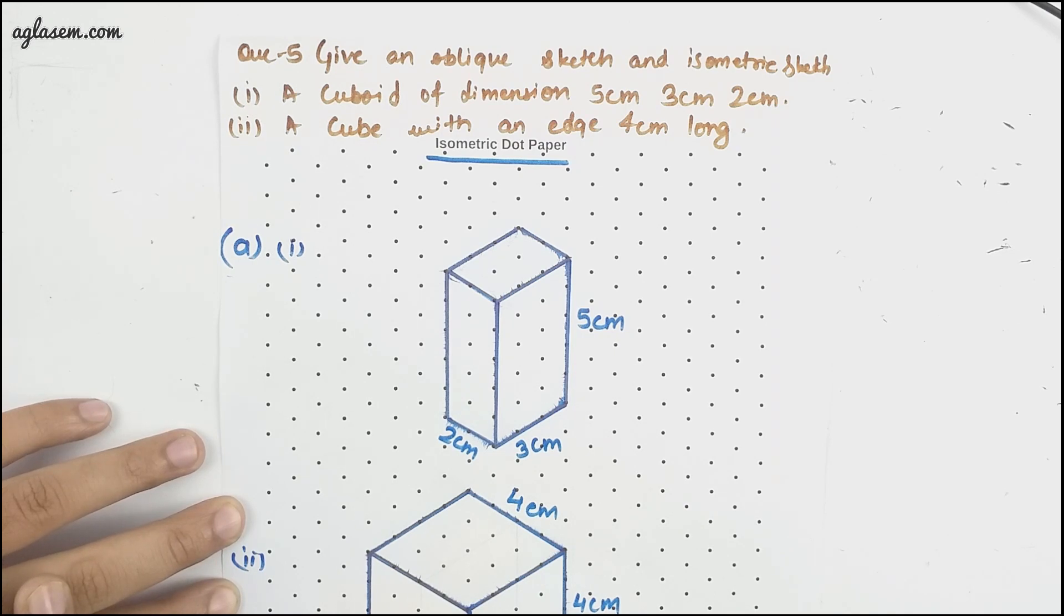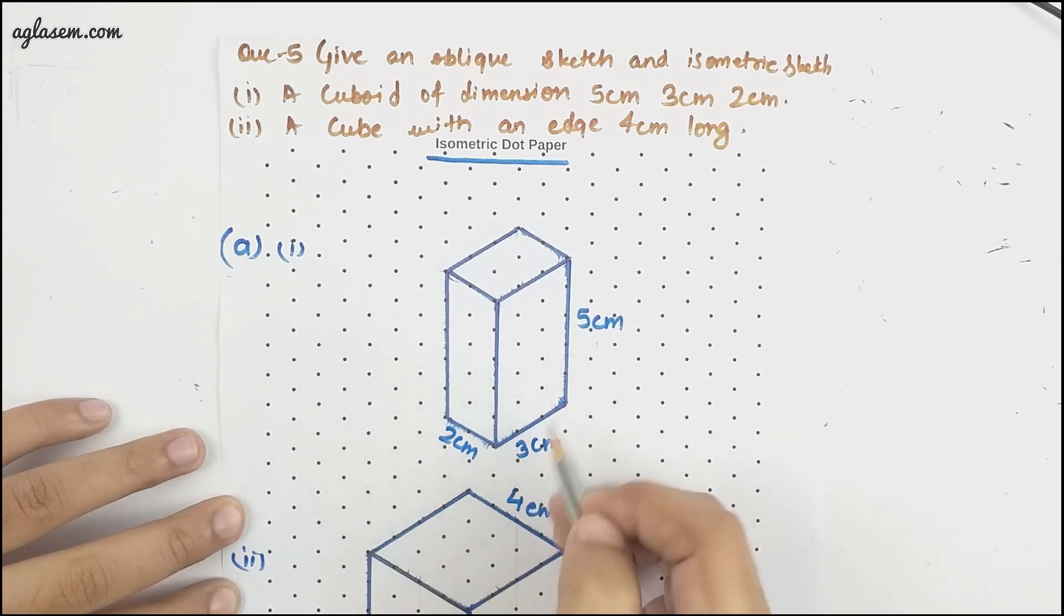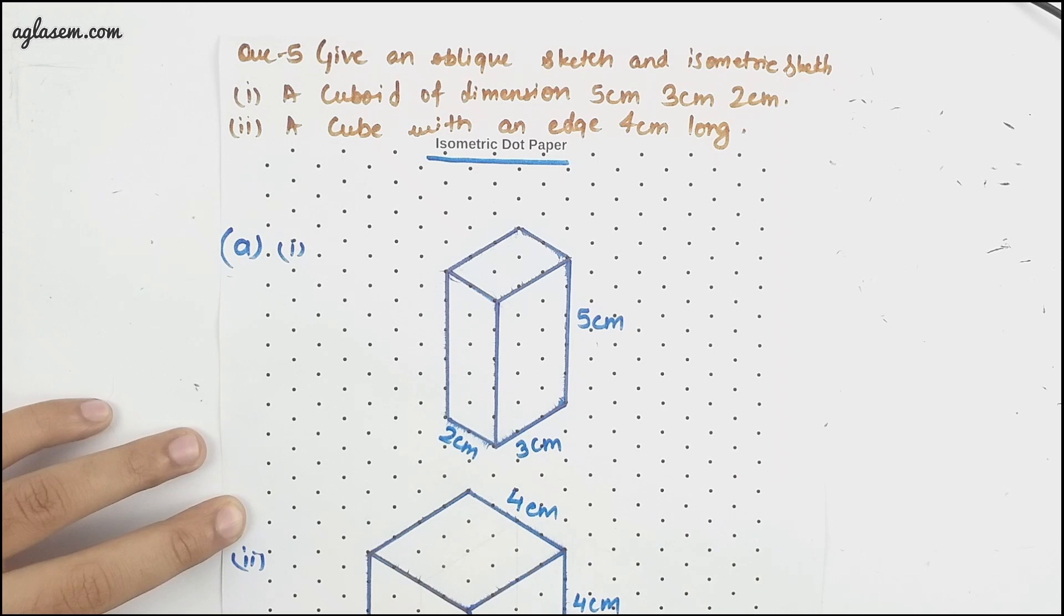So cuboid we have drawn for you 5, 3 and 2 are the sides. A cube with an edge 4 cm long. This is done for you. So this was isometric and for oblique sketch it will be like this.